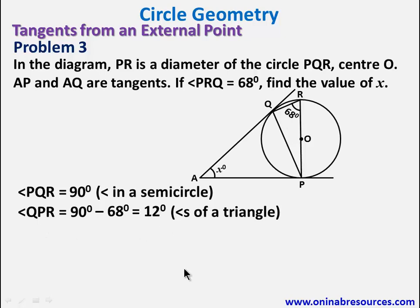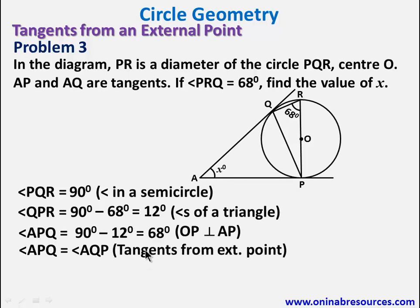So we have it as 12 degrees. Since we've gotten this angle here, we can go ahead to calculate this angle. Since OP is perpendicular to AP, so we say angle APQ is 90 minus 12 degrees. That's 68 degrees. Since OP is perpendicular to AP, that's the angle there is 90 degrees. So we also see that APQ, this angle, is equal to AQP. That is tangent from external points.